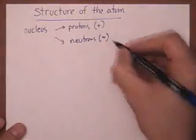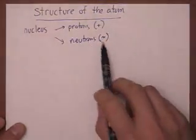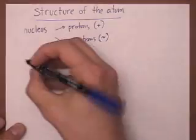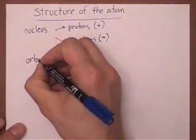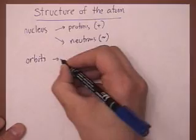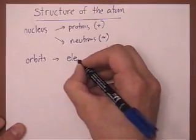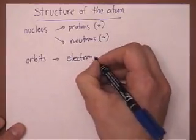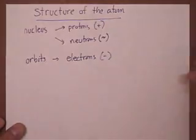Neutrons are neutrally charged particles. You're also going to have orbits, and your orbits are composed of electrons, which are negatively charged particles.